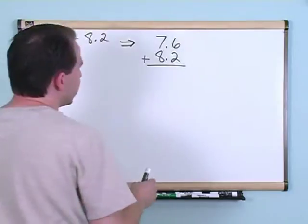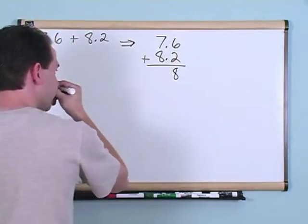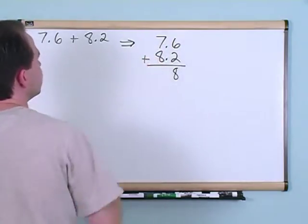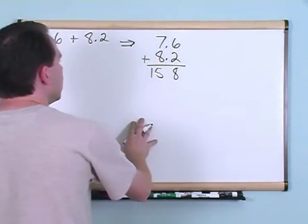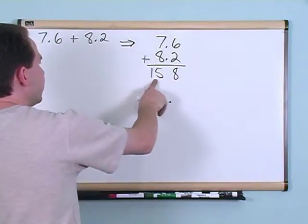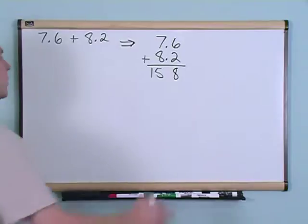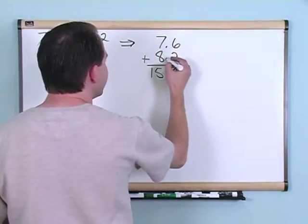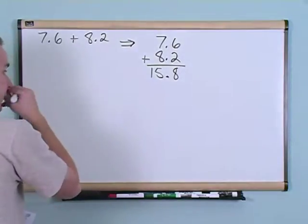So we're going to start in the right hand column like we always do. 6 plus 2 gives you 8, and 7 plus 8 gives you 15. Now the only thing you have to realize with decimals is when you add them, you line the decimal up and you take that decimal and drag it right down. So the answer is 15.8.